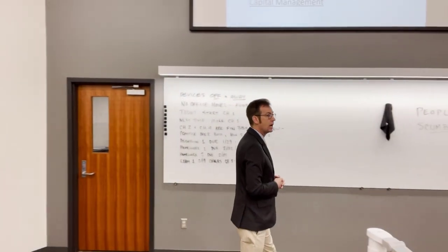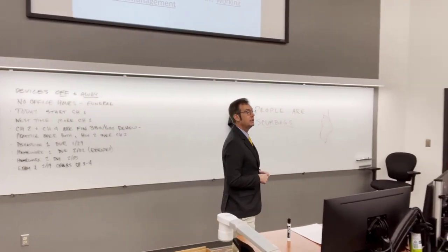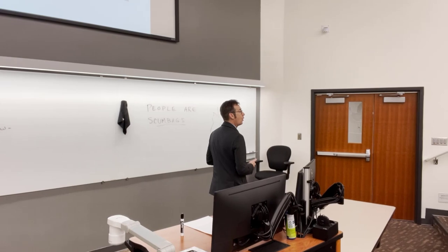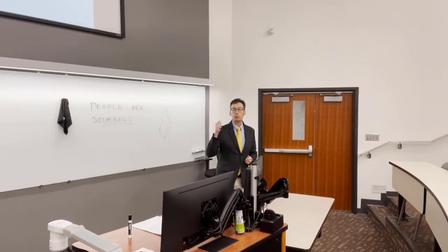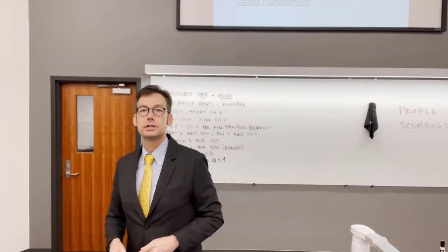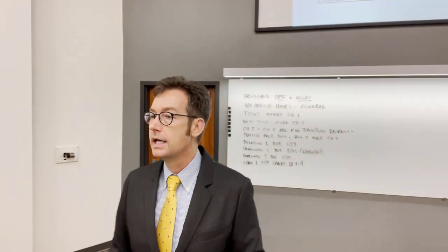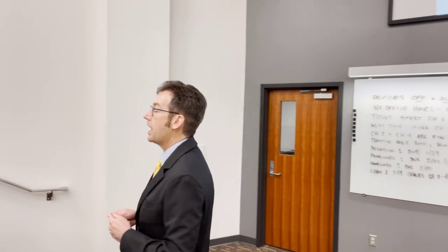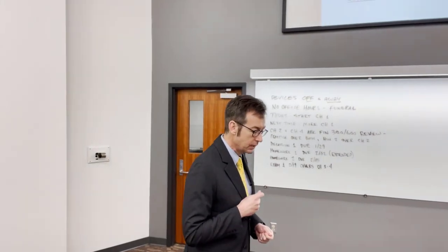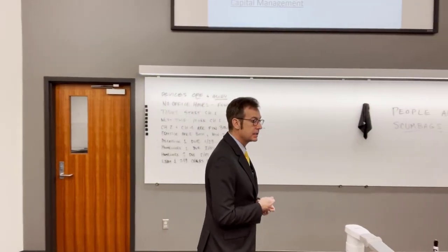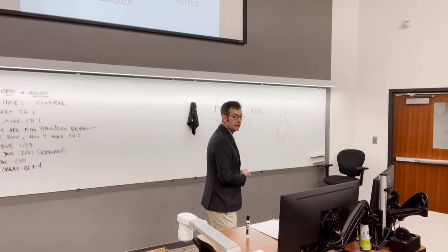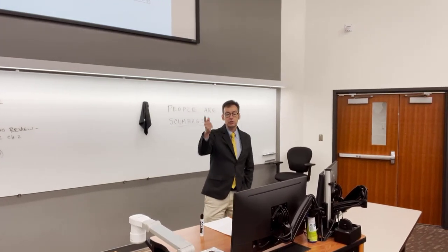The second question is: now that we've figured out what assets we want to buy, how are we going to pay for it? It's a question of debt or equity, and we call this the capital structure question. The capital structure is the mix of debt and equity that are used to finance the assets of the firm.